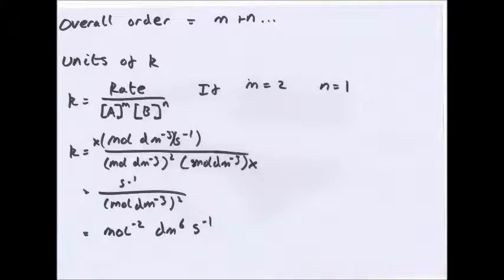You can work out the overall order by adding up all the orders of each concentration. So if n was one and m was two, you'd have an overall order of three.